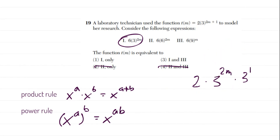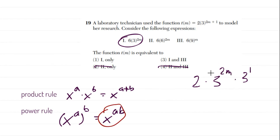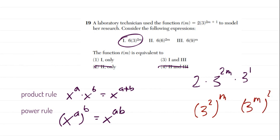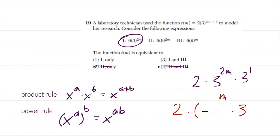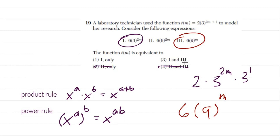Now let's try to break down 3 to the 2m further. We have two terms being multiplied in our exponent, which looks like the power rule. So 3 to the 2m is the same as 3 squared raised to the power of m. We know 3 squared is 9, so replacing that, the 2 and the 3 still multiply together, giving us 6 times 9 to the m power. That matches numeral three, so the answer is numerals one and three.